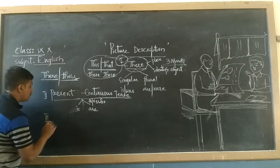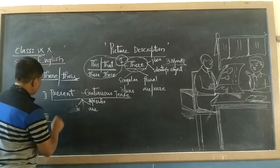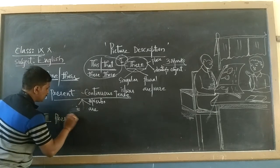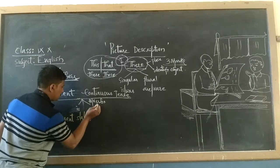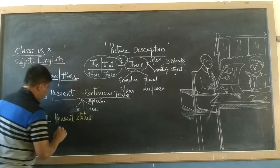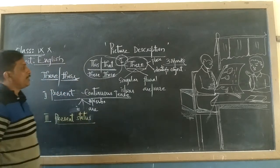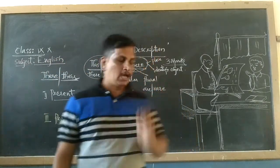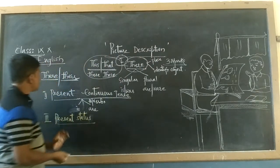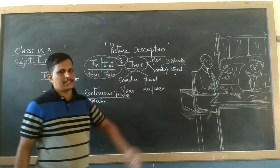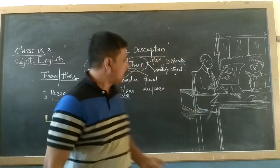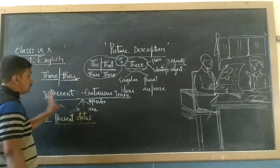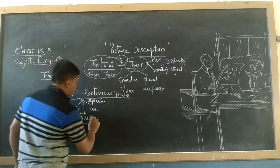The third step is present status. Dear students, I hope you are understanding. The first step is using 'there' to identify singular and plural common nouns. The second step is using present continuous, constructing sentences with the helping words 'is' or 'are.' The third step indicates the present status.